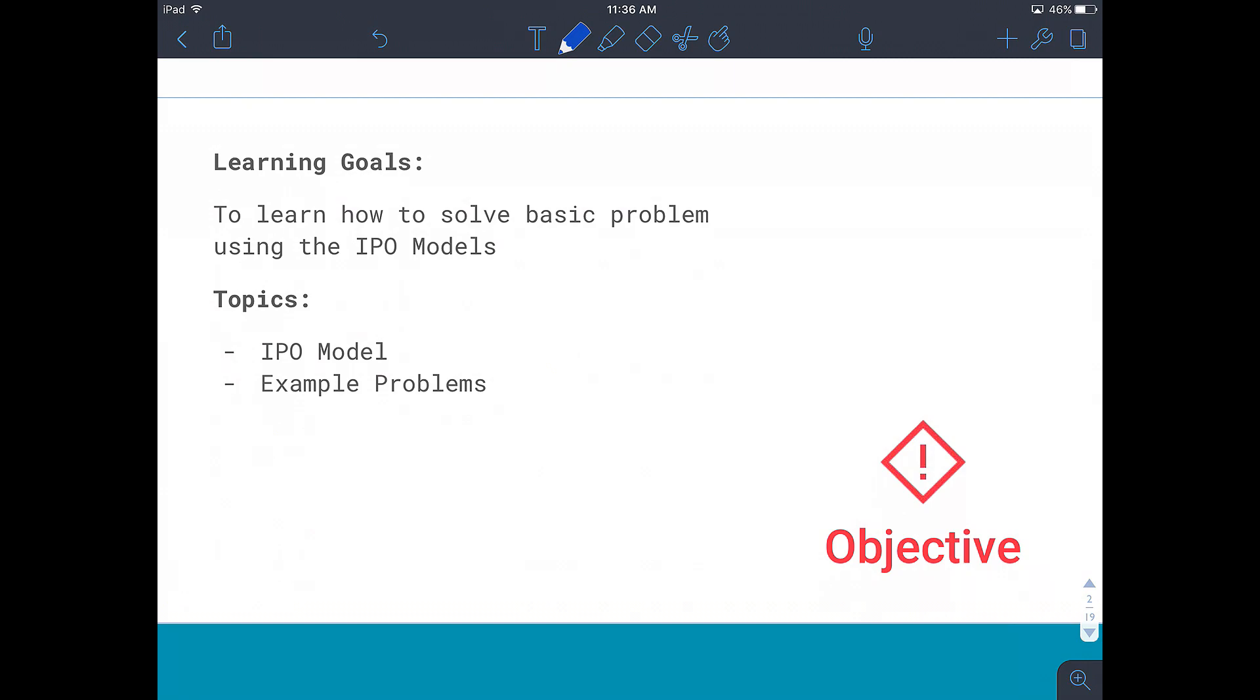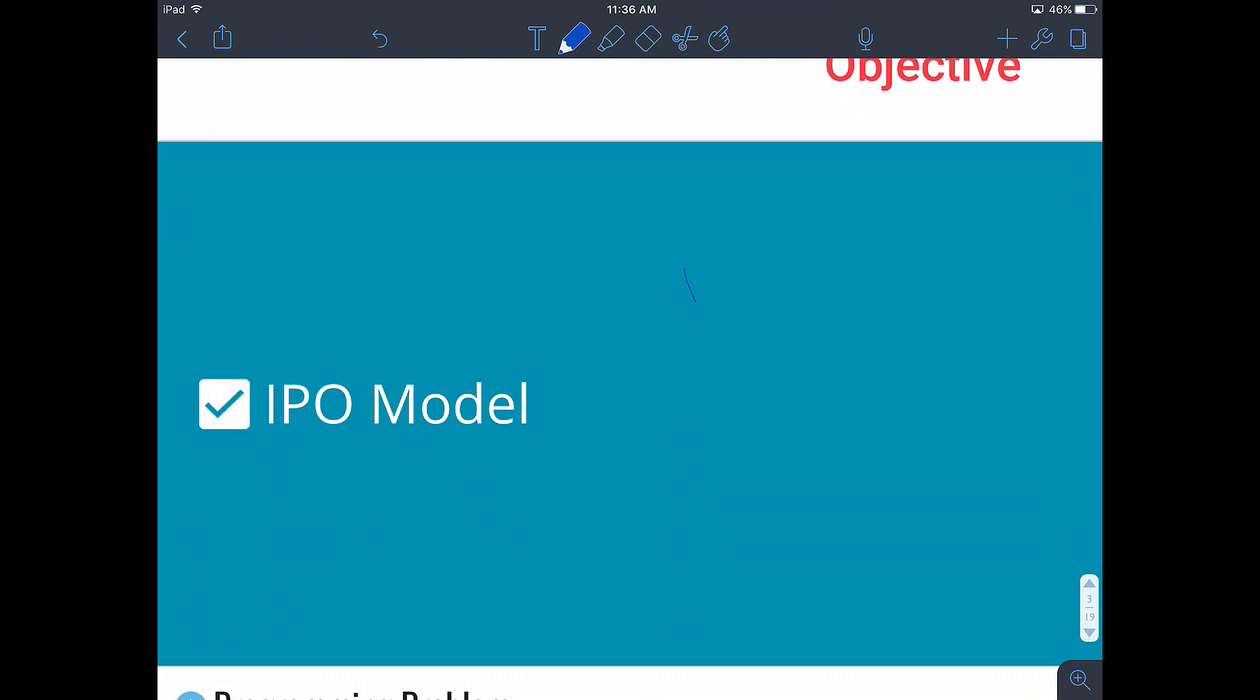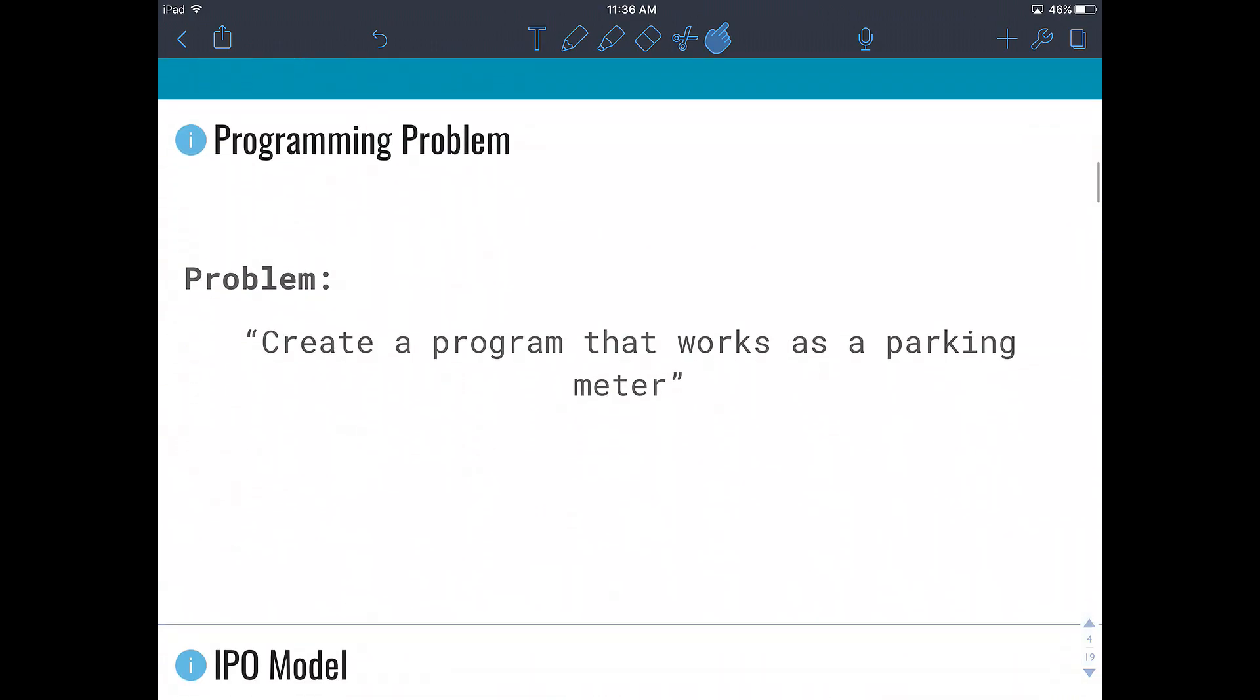Today the topics will include going through the three stages of the IPO model and looking at some example problems. To start off our lesson to learn about our IPO model, we're going to look at a programming problem. The problem states that we are to create a program that works as a parking meter.